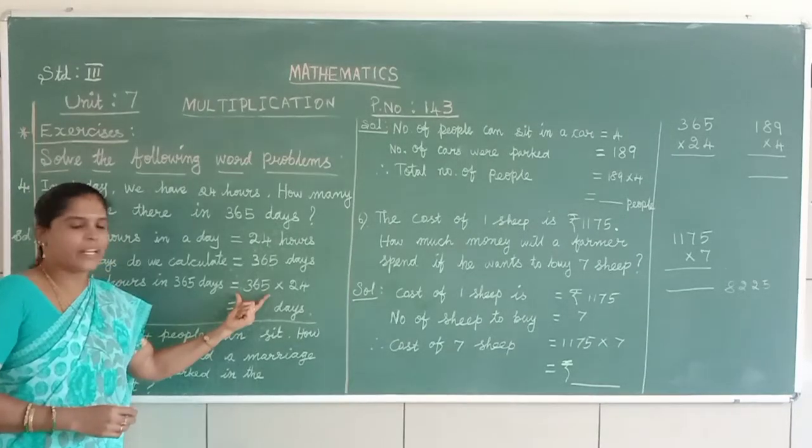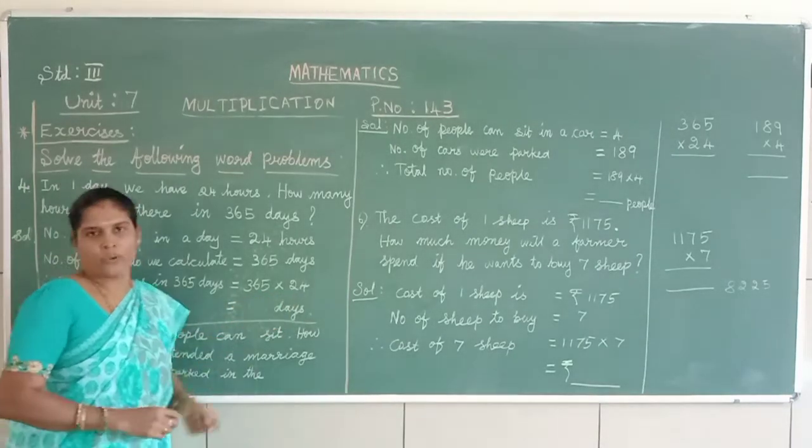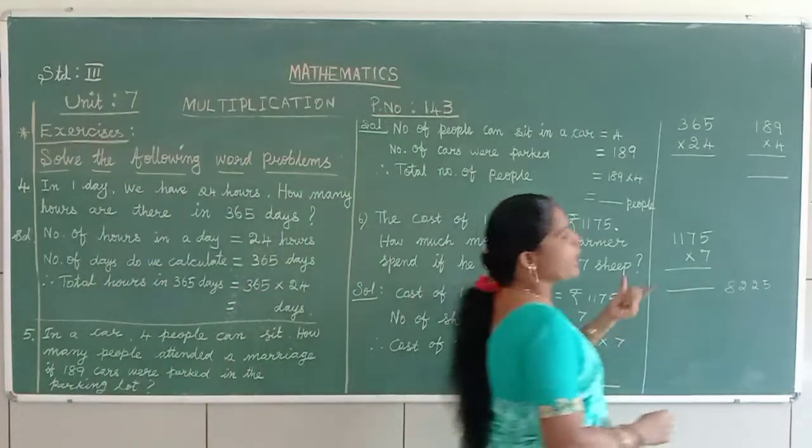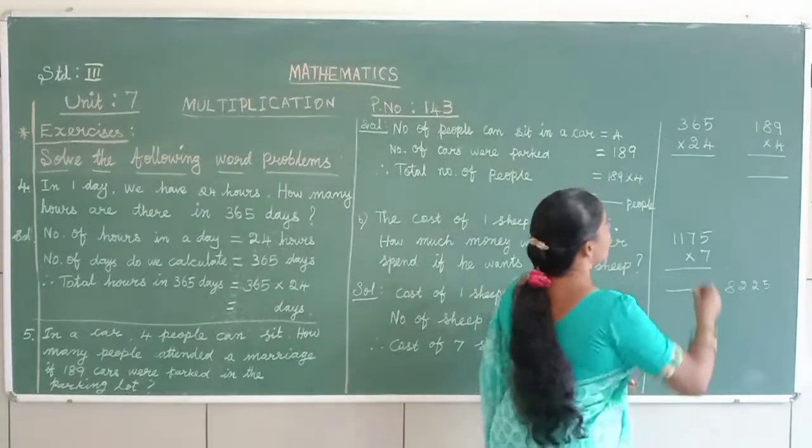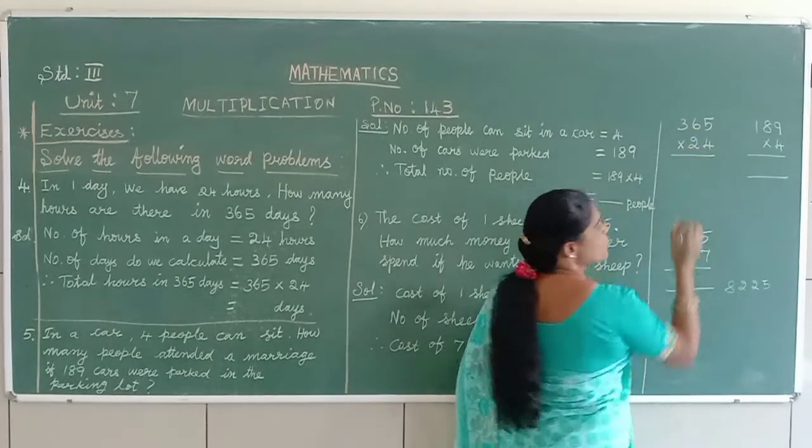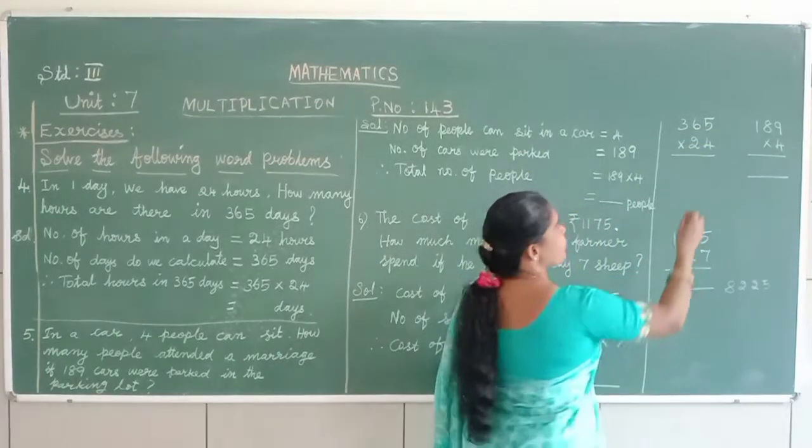Total number of hours in 365 days. 365, 365 into 24. Come to the working column. We have to do the multiplication. Okay. 365 into 24.